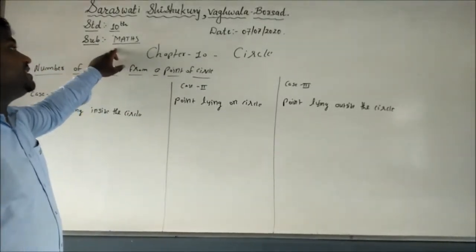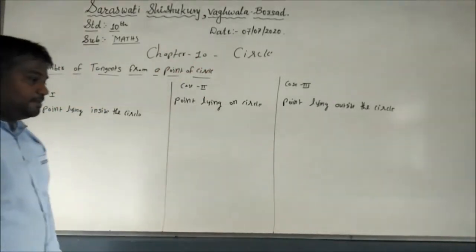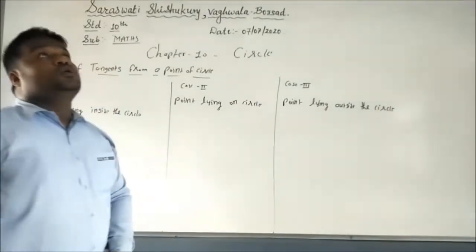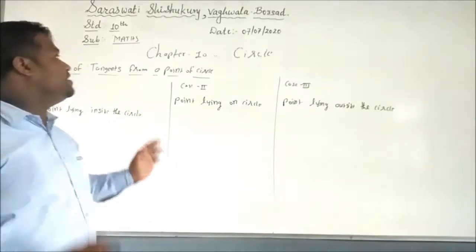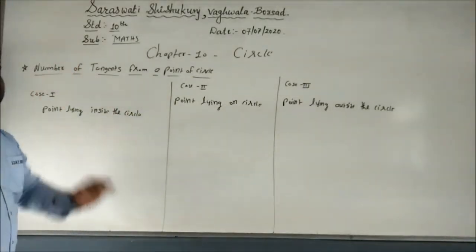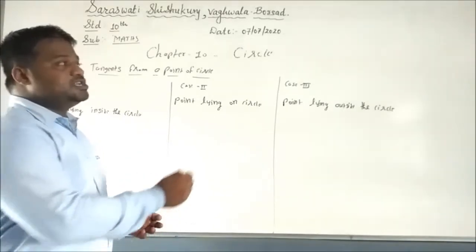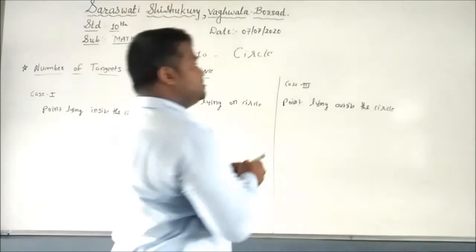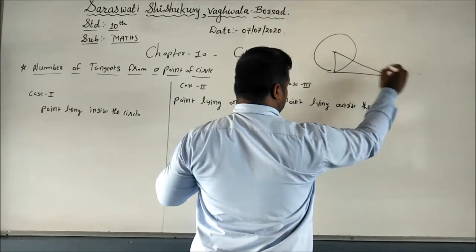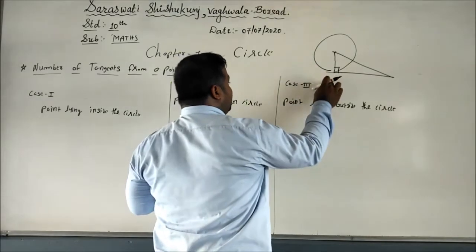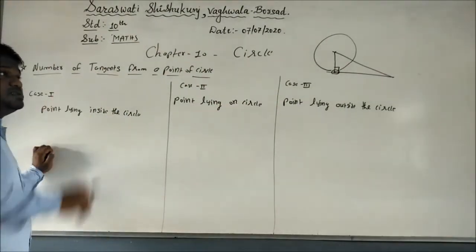Hello friends, this is Video 3 of Chapter 10 on Circles. In the previous lecture, we learned Theorem 10.1: a tangent drawn to any point of a circle is perpendicular to the radius at the point of contact — it is always the shortest distance. We solved sums using that theorem, drawing a circle with one tangent and completing the sum.